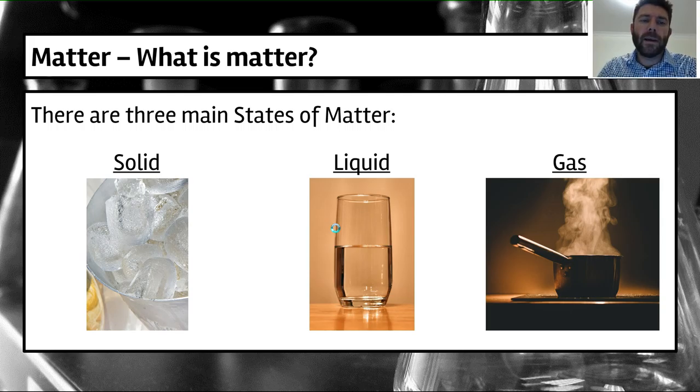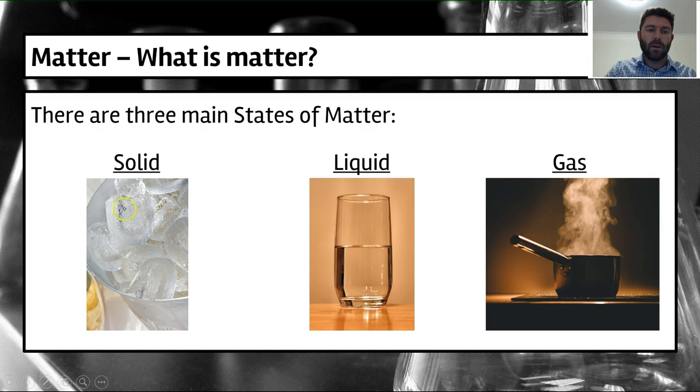So what do we know about matter? Well, it exists in most cases in three states. Not everything exists in all three states, but we've got over on the left here ice cubes which we can consider solid. We've got a glass there of liquid, a glass of water, and then we've got some steam here coming out of that pan, which would be classified as a gas or water vapor. Water is a really good substance to use because it actually exists in all three forms and we can actually manipulate it really easily.